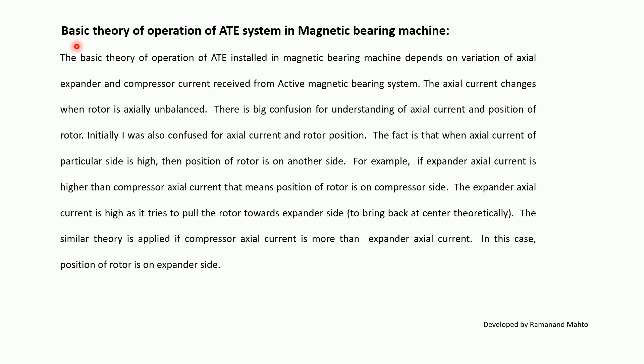The basic theory of operation of the AT system in a magnetic bearing machine depends on the variation of axial expander and compressor current received from the active magnetic bearing system. Axial current changes when the rotor is actually unbalanced. There is a common point of confusion regarding axial current and the position of the rotor.